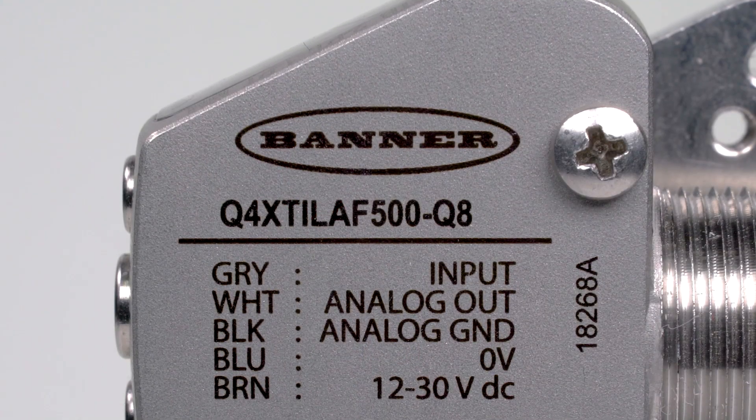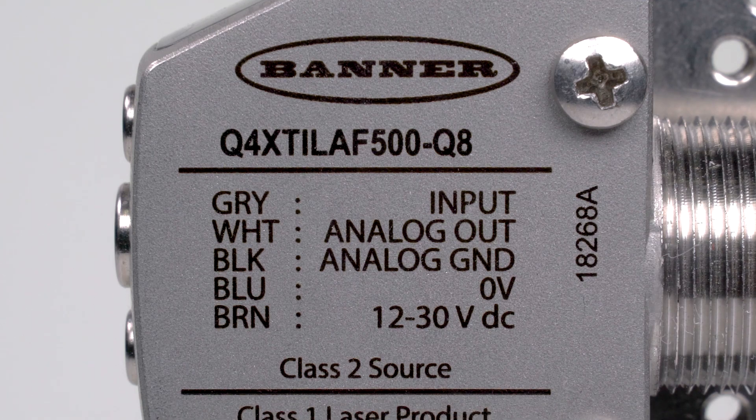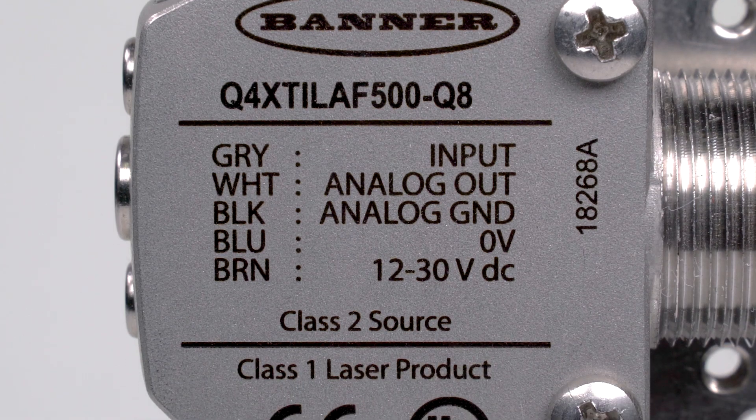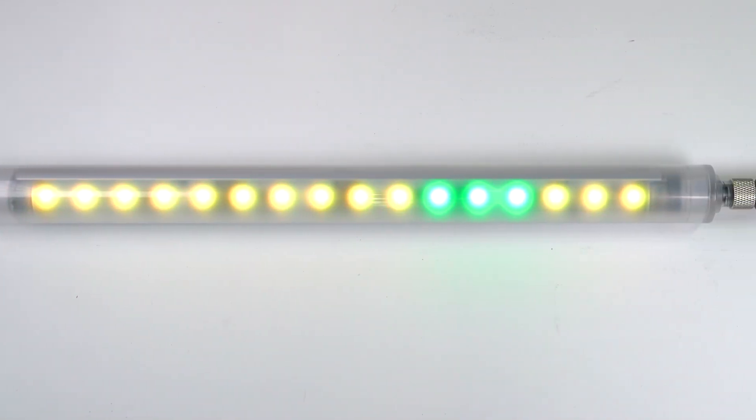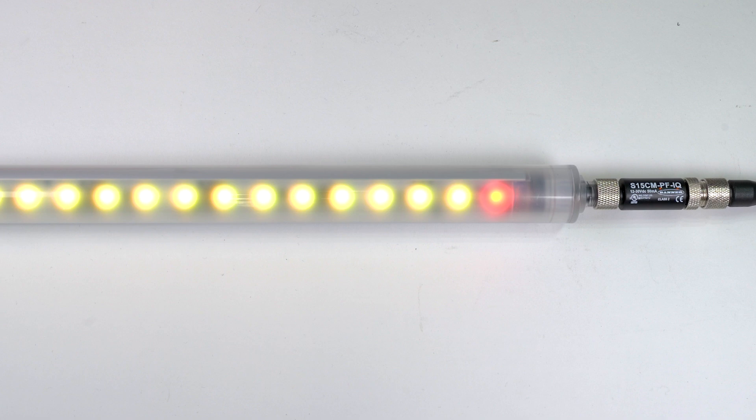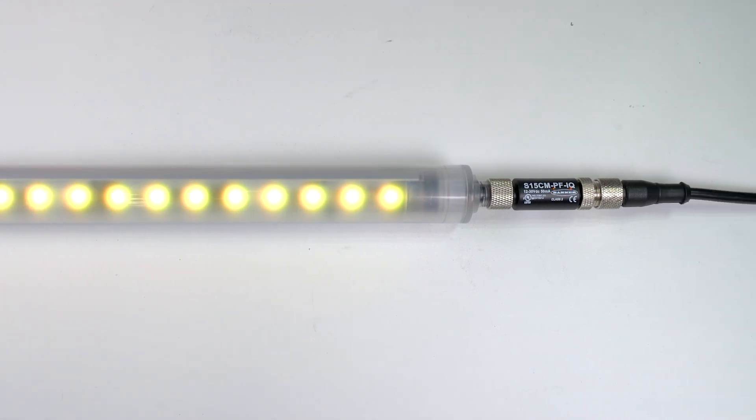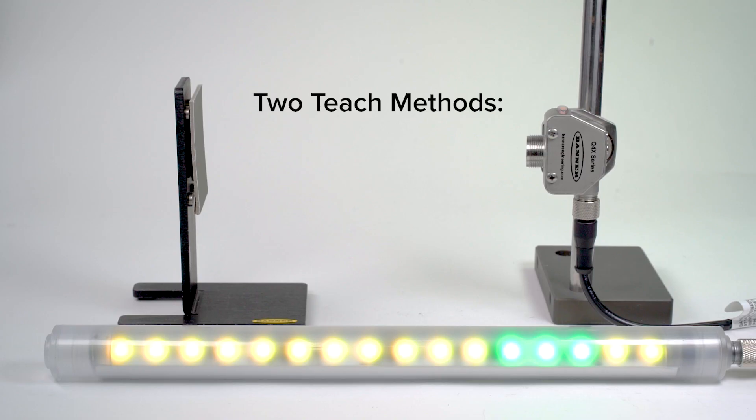For this example, we will be using a current-based model with an output of 4 to 20 milliamps, but the voltage-based models follow the same process. We will also be using a pro strip light and an analog to PFM converter to visualize the sensor's output signal. The analog models have two teach methods,